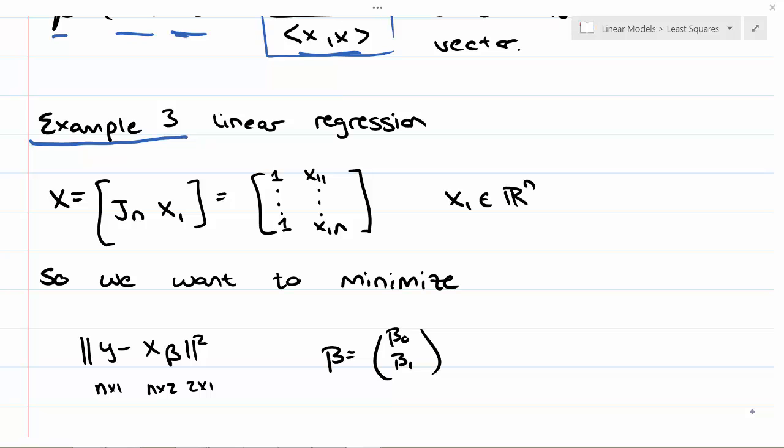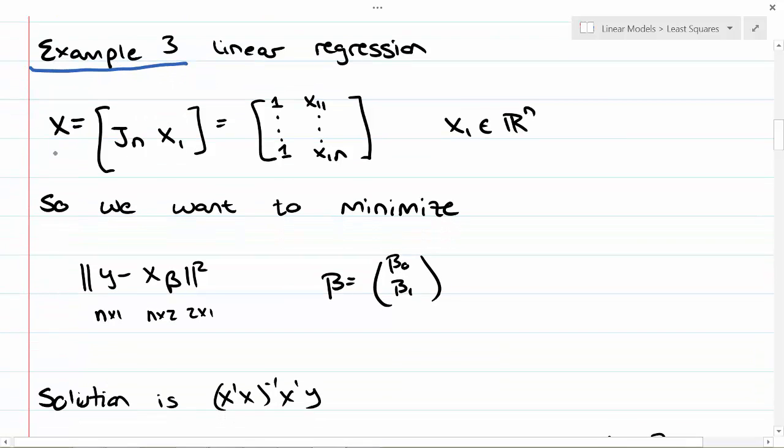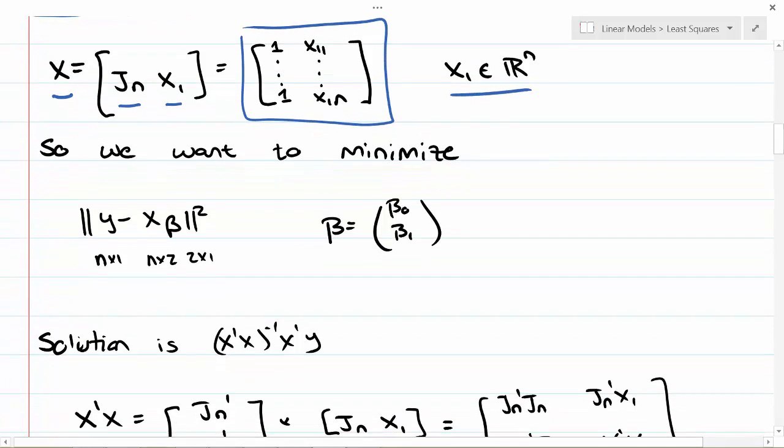Now let's do linear regression. We have a model with a design matrix with a vector of 1s as the first column and a vector of regression values as the second column. We could write it where x_1 is in R^n. We want to minimize our least squares criteria, and now our beta is beta-naught and beta-1, beta-naught the intercept and beta-1 the slope.